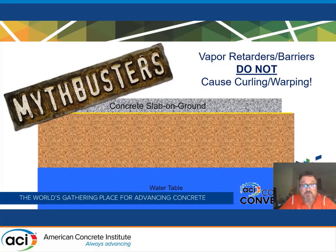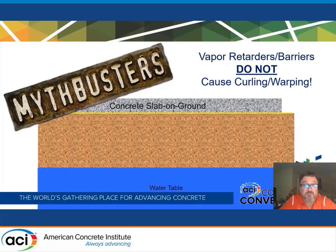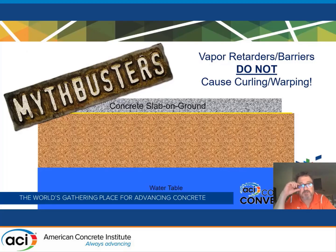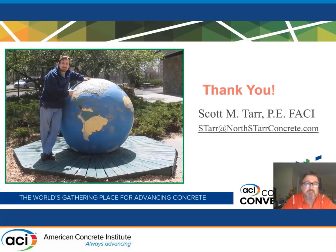So now, if you need to control curling, it's recommended that you use a vapor retarder. We recommend using vapor retarders under industrial floors on ground — warehouse conditions or office conditions. I appreciate the time and appreciate the Concrete International Award. My name is Scott Tarr — thank you for your time.